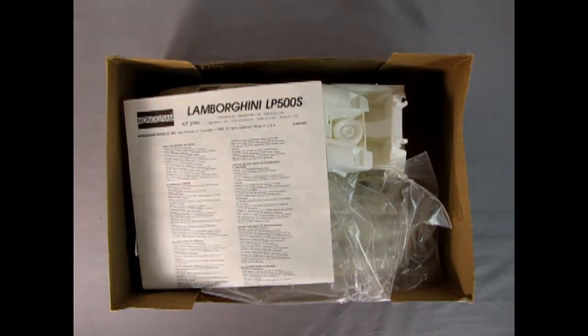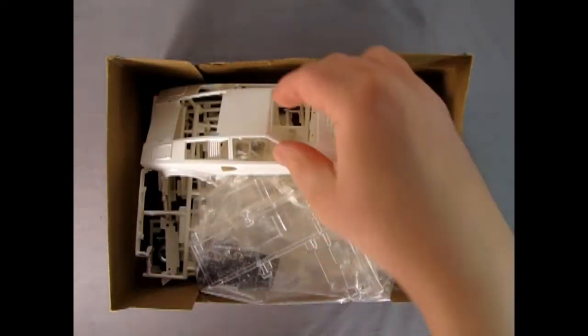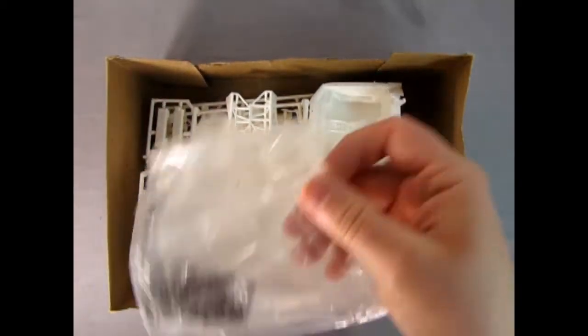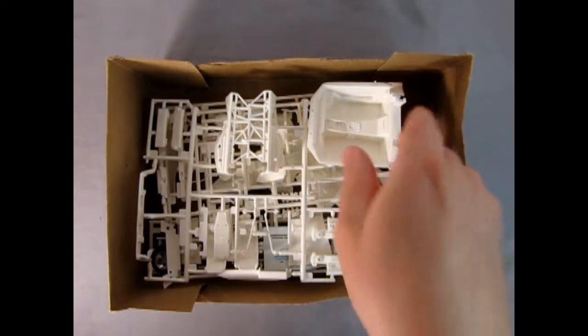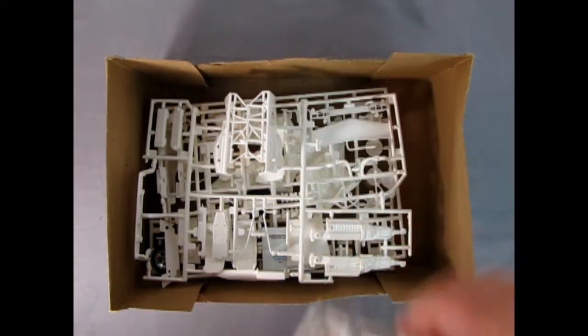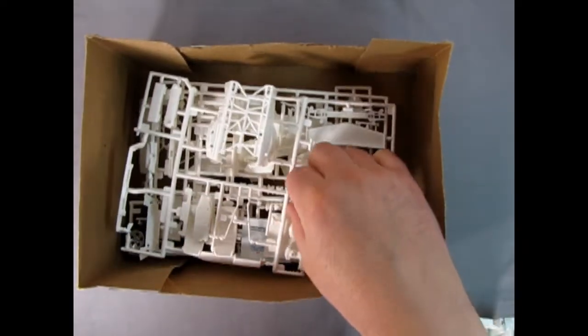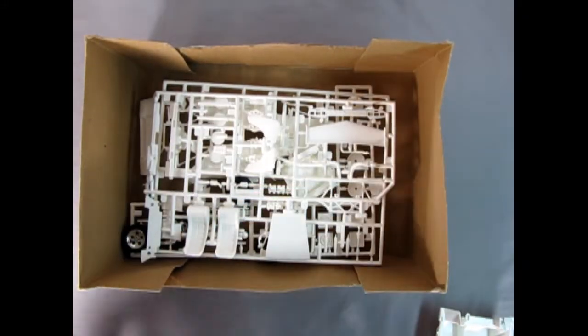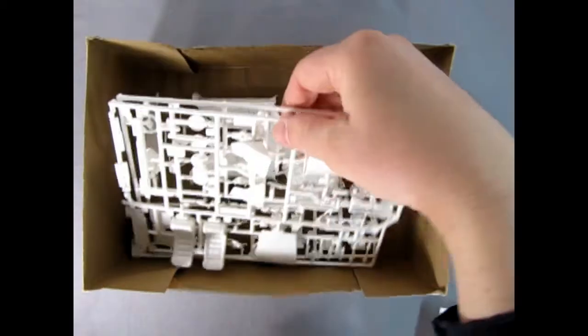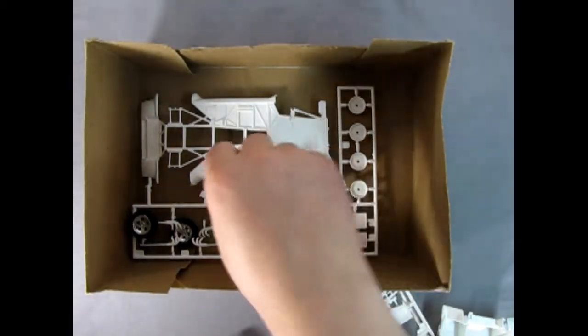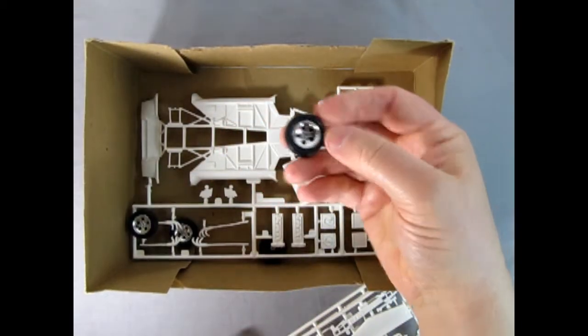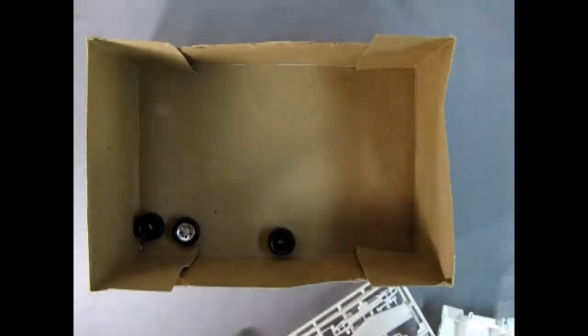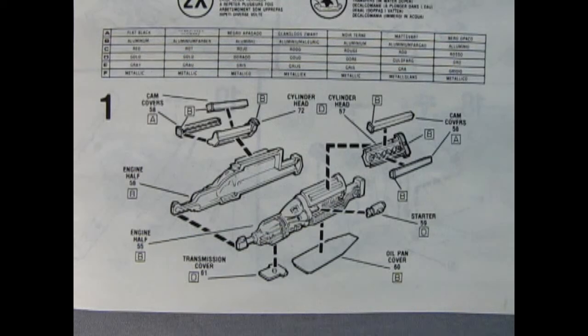Here we've got our instruction sheet, the wonderful body for our Lambo, the glass sitting in here, all these nice white components for the interior, this nice frame and the big V12 sitting in there, a decal sheet, and more great parts. There's tires in here. Somebody cut the chrome out of there, and many more other great things.